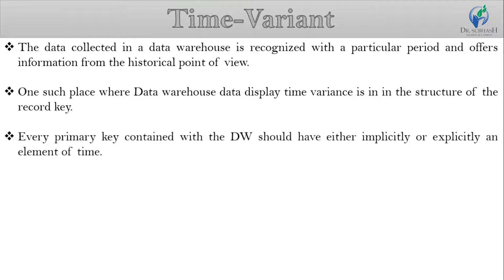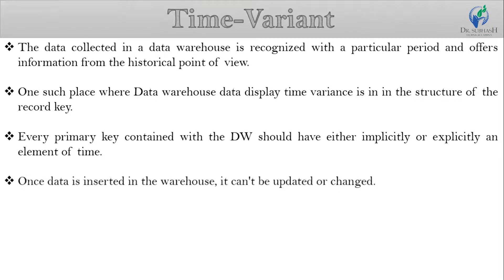Every primary key in the data warehouse should have either implicitly or explicitly an element of time, like day, week, month, etc. Another aspect of time variance is that once data is inserted in the warehouse, it cannot be updated or changed.